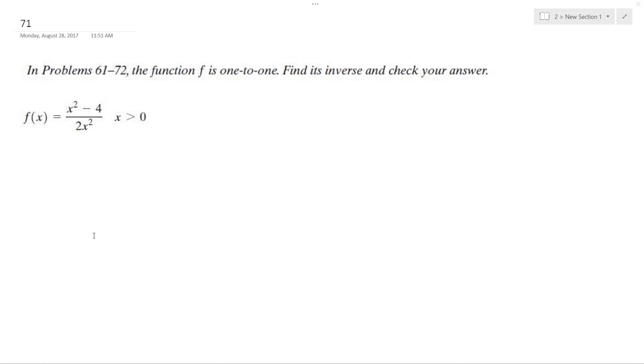Alright, so we want to figure out the inverse of this function. y equals x squared minus 4 over 2x squared. Swap them. So we get x equals y squared minus 4 over 2y squared.